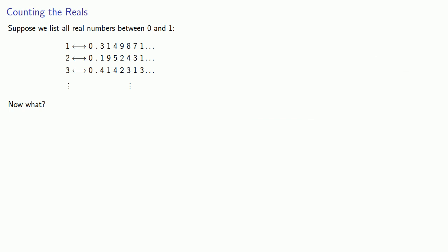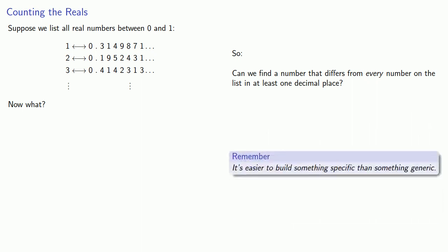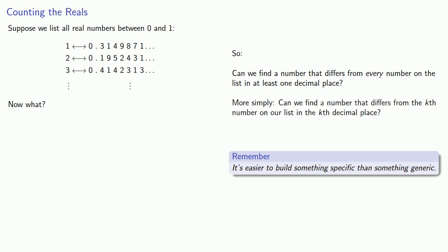If this list includes all real numbers between 0 and 1, then every number is going to be someplace on that list. So the question you've got to ask yourself is: can we find a number that differs from every number on the list in at least one decimal place? Or, because it's easier to build something specific than something generic, can we find a number that differs from the kth number on our list in the kth decimal place? And the answer to that is yes.